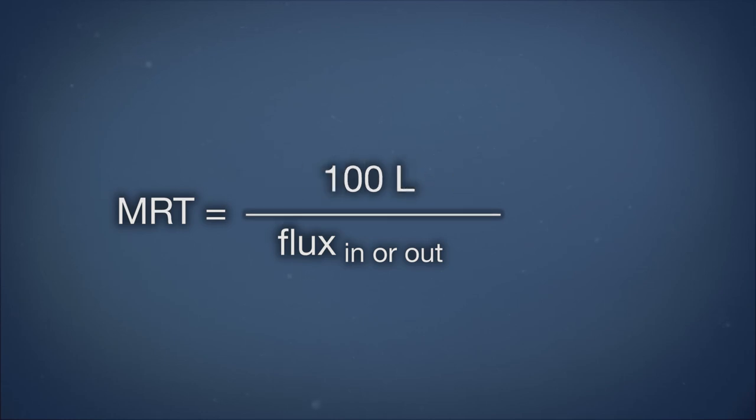Because it is in steady state, we can calculate the mean residence time of water in the bucket. The pool in the bucket is 100 liters, and the flux in or out is 10 liters per day. Dividing the pool, 100 liters, by the flux, 10 liters per day, gives you a mean residence time for water in the bucket of 10 days.